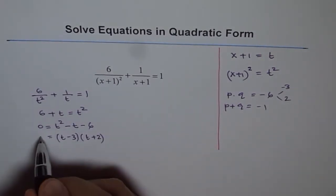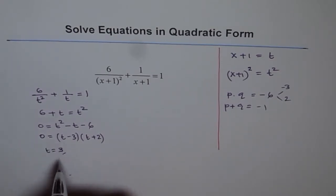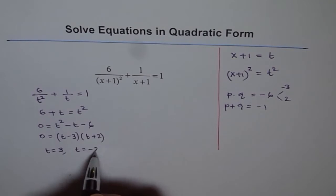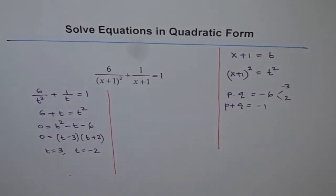So from here, this is equal to 0 only if t is equal to 3 or t equals minus 2. So these are two possible solutions. But what we need is really x. So let's substitute this back into our equation and see.